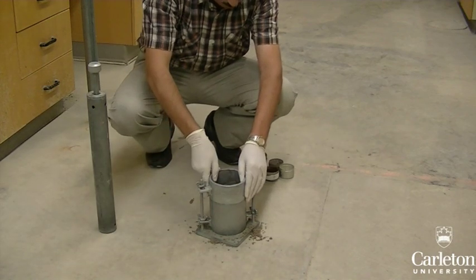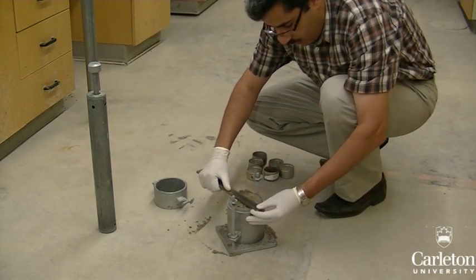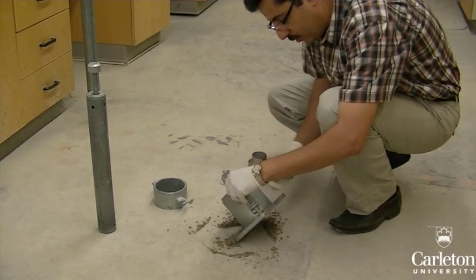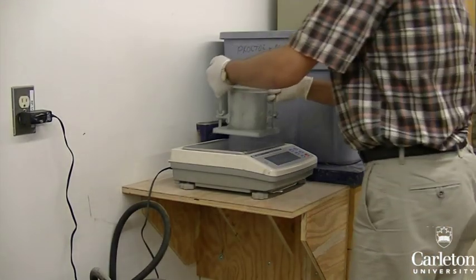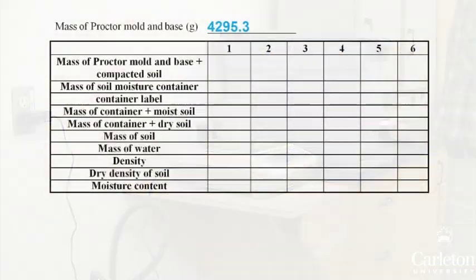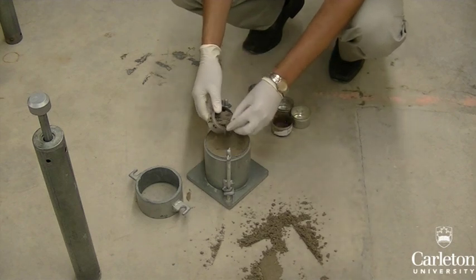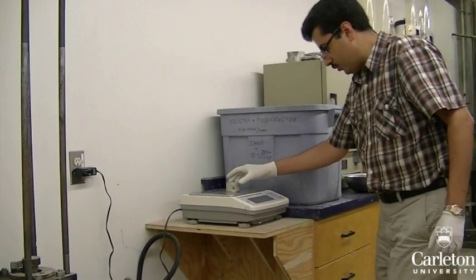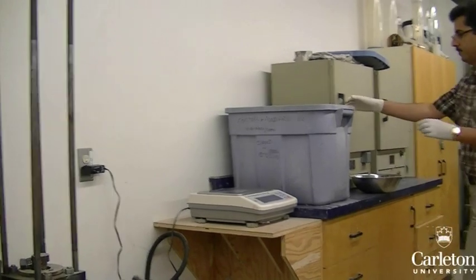Once this is done, remove the top cap. Take off the excess soil by using a flat tool. Clean the base of any loose soil that may have come off. Next, measure the mass of the mold and compacted soil, and record this mass in a table. Now fill one of your moisture containers with a sample of soil from the mold by using the container itself to scoop some of the sample. Record the mass of the container with the sample in it, and place the soil in an oven to dry.